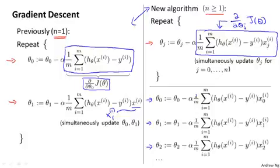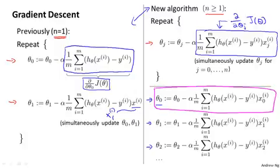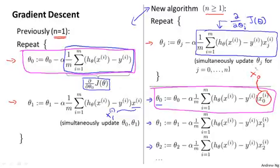If you look at the update rule for theta0, what you find is that this update rule here is the same as the update rule that we had previously for the case of n equals 1. And the reason that they're equivalent is because in our notational convention, we had this x0 equals 1 convention, which is why these two terms that I've drawn the magenta boxes around are equivalent.